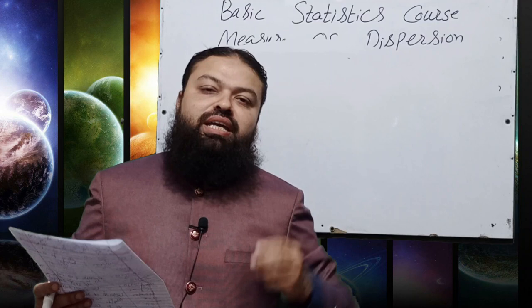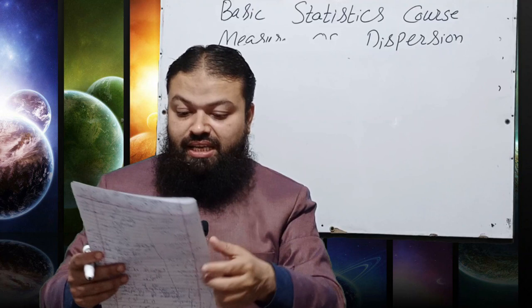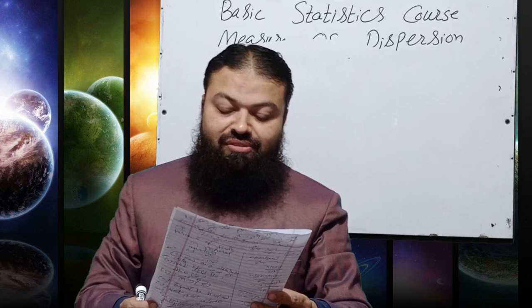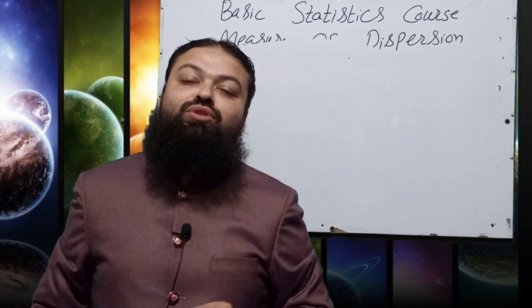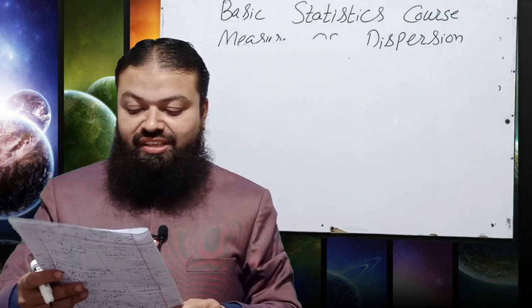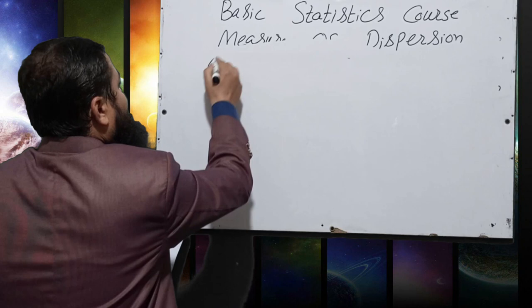Question number 5: Which statistic is unaffected by outliers? Options: (a) interquartile range, (b) mean, (c) standard deviation, (d) range. The interquartile range is not affected by extreme values, so option (a) is correct.